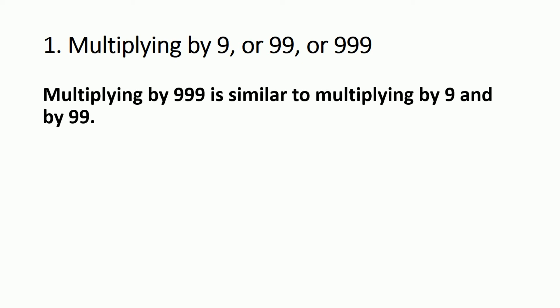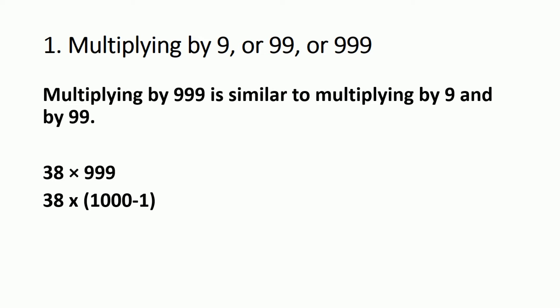For multiplying by 999, it's similar: use 1000 minus 1 equals 999. Write three zeros at the end of the number. For example, 38 multiplied by 999 is like 1000 minus 1, so write 38000 minus 38. You can do this subtraction in your mind — the answer is 37,962.